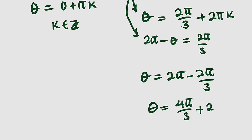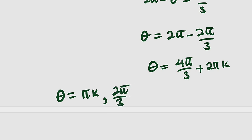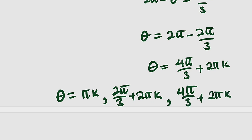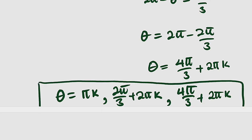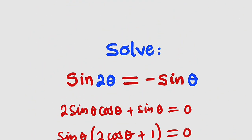Remember to add multiples of 2π. So in general we have three solutions: θ = πk, or θ = 2π/3 + 2πk, or θ = 4π/3 + 2πk. These are the solutions to this problem. Thank you for watching — do share with your learning colleagues and don't forget to subscribe to my YouTube channel for more videos.